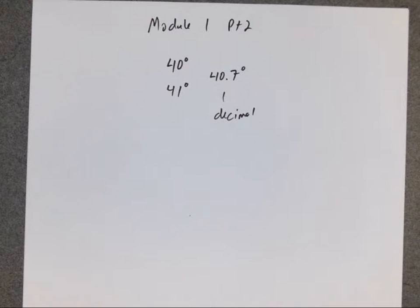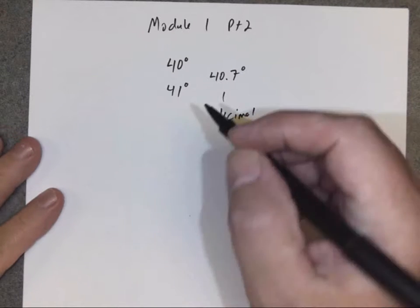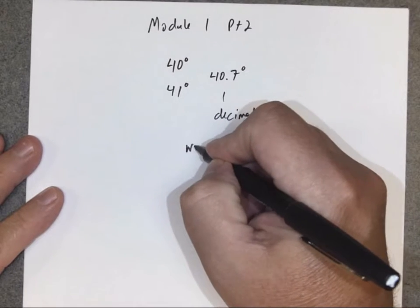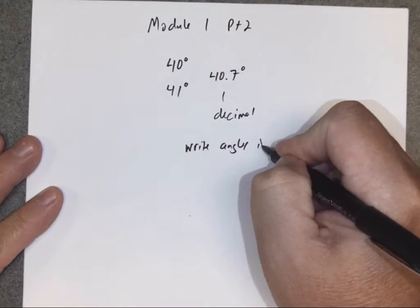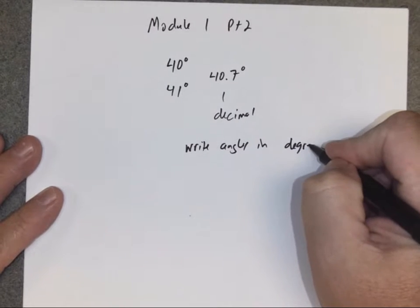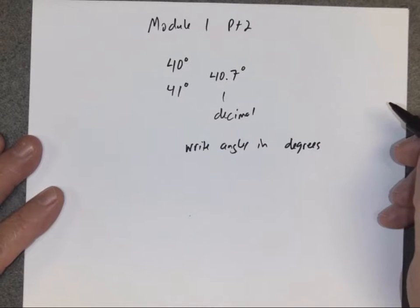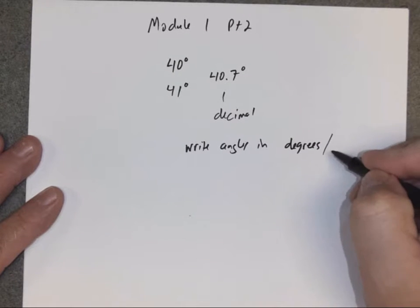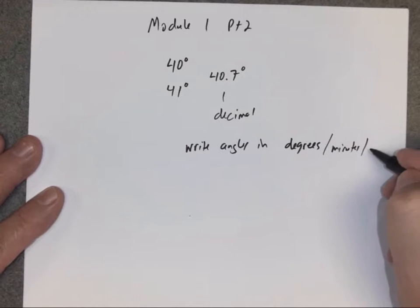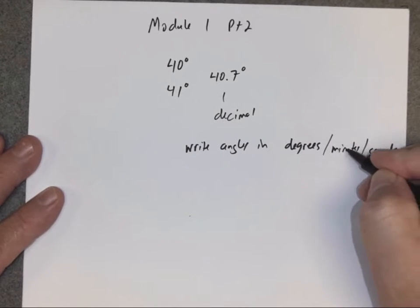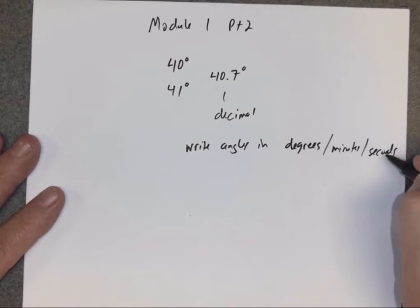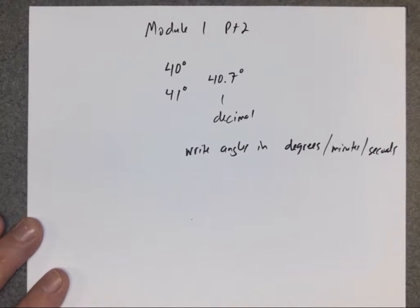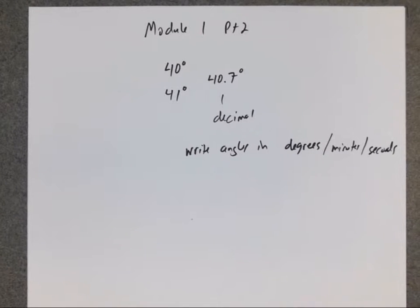However, there's another way to write very precise angles. Instead of decimals, you can write angles in degrees, but if you break degrees into really small parts, you break them up into minutes, and if you break it up further, into seconds. It's similar to how minutes and seconds describe time, but they can also describe the measurement of angles.